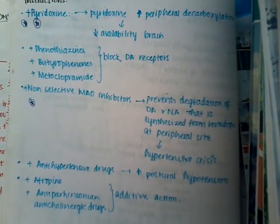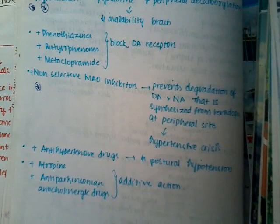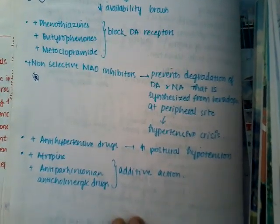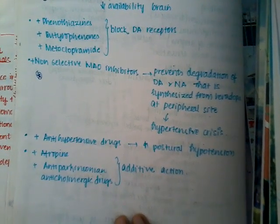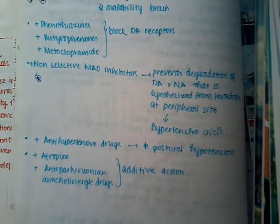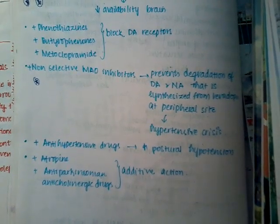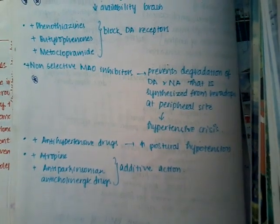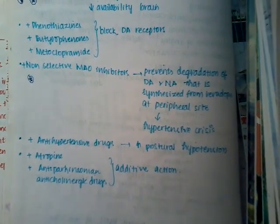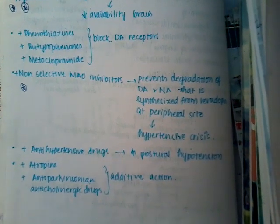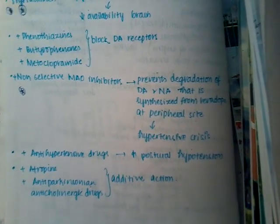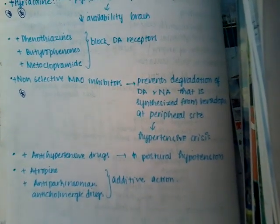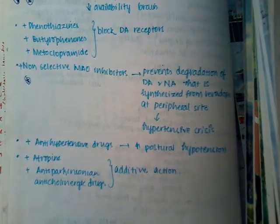Drugs like phenothiazines, butyrophenones, and metoclopramide block dopamine receptors. Non-selective MAO inhibitors prevent the degradation of both dopamine and noradrenaline, resulting in hypertensive crisis. Therefore, non-selective MAO inhibitors should not be given with levodopa.